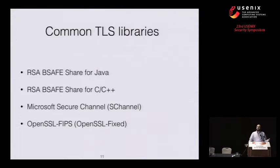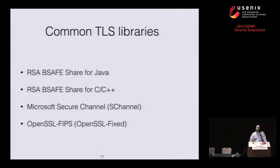We looked at four common TLS libraries that implement Dual EC: RSA's BSAFE for Java and BSAFE for C and C++, Microsoft's SChannel, and OpenSSL FIPS — which was actually broken, so we had to apply a small fix to make it work. All of these support Dual EC as a random number generator, and the RSA libraries support it as the default choice.